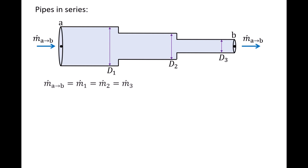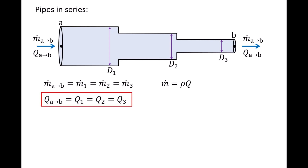That is, M dot AB is equal to M dot 1, equal to M dot 2, and equal to M dot 3. Since the mass flow rate equals density rho times volumetric flow rate Q, and the density is constant, the volumetric flow rate is constant throughout the three pipes as well, and we will call this flow rate Q AB. From now on, we will usually use volumetric flow rates rather than mass flow rates when using conservation of mass.